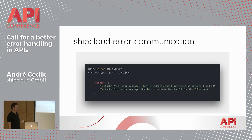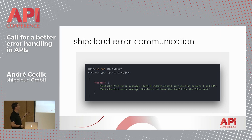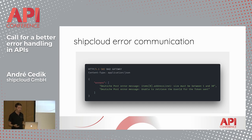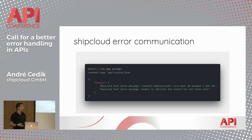This is the way we are currently communicating errors to our API consumers — specifically when a third party, like in this case the carrier Deutsche Post, is returning an error. We're showing an array of error messages, which is neither a beautiful nor useful way of doing it. It's especially bad when you factor in that consumers of our API will have to communicate this to their users.